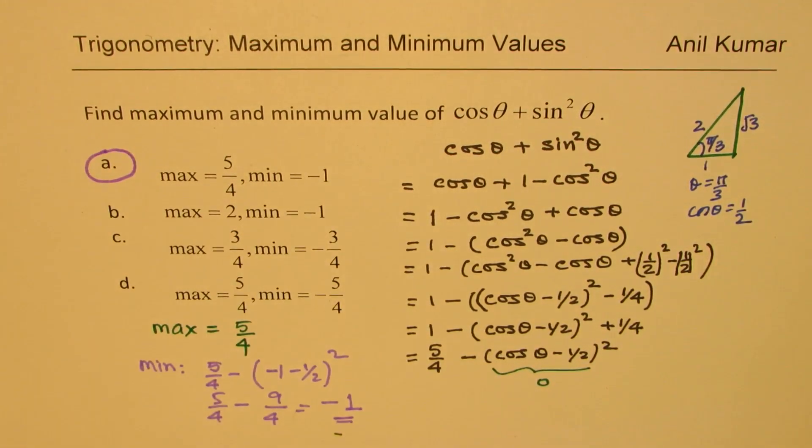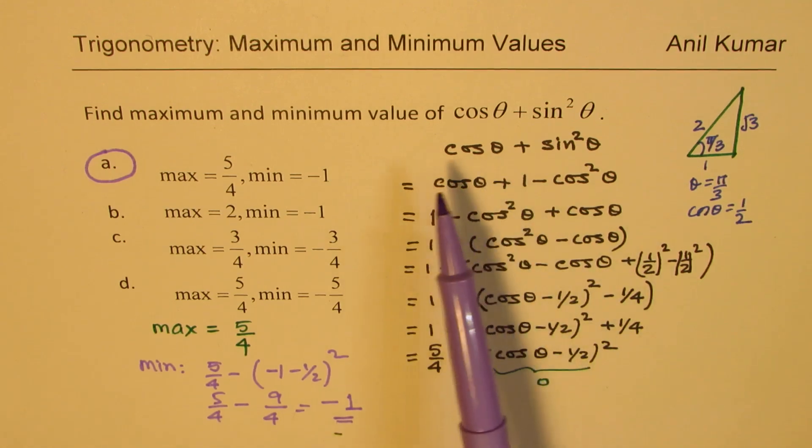So that matches with our option A. Perfect. So that is how we could find maximum and minimum value. That is the strategy. You need to complete the square and get it in a form so that you can easily find maximum or minimum value for the trigonometric function.